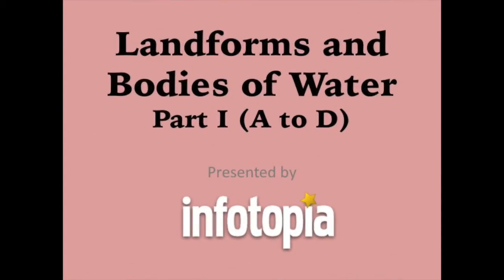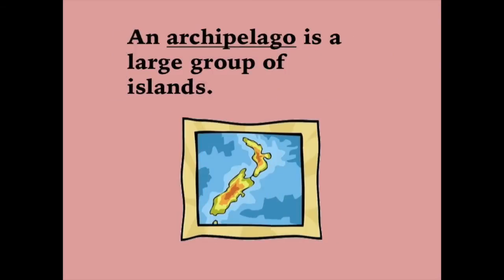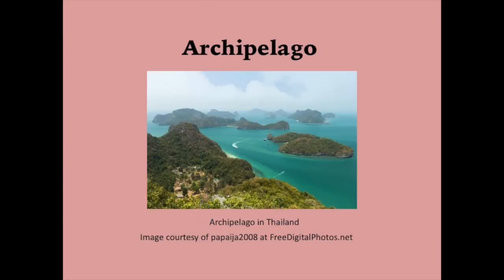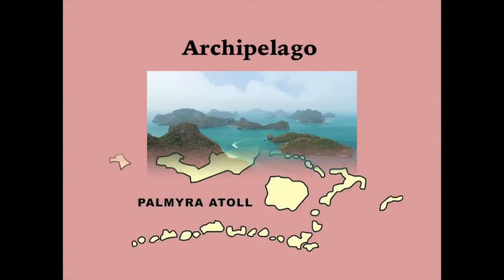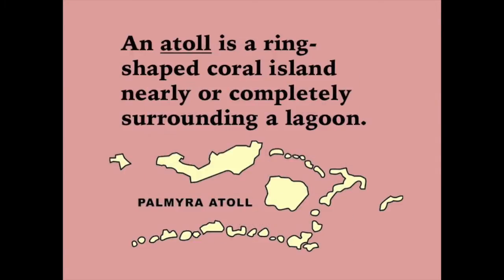Landforms and Bodies of Water from Infotopia. An archipelago is a large group of islands. An atoll is a ring-shaped coral island nearly or completely surrounding a lagoon.